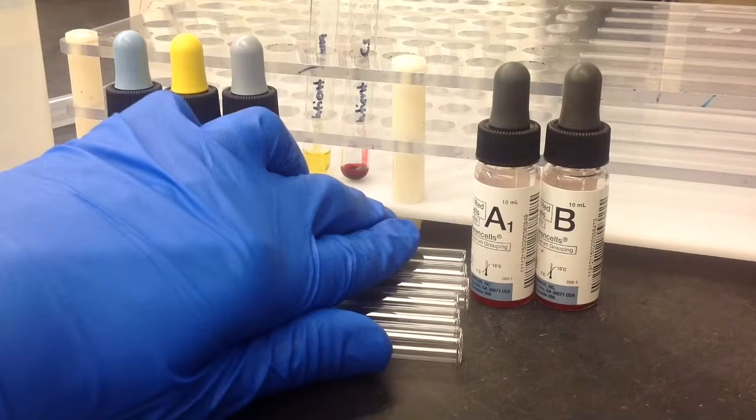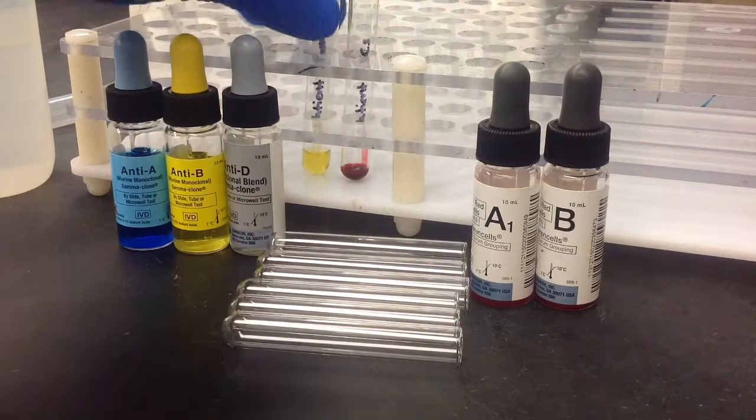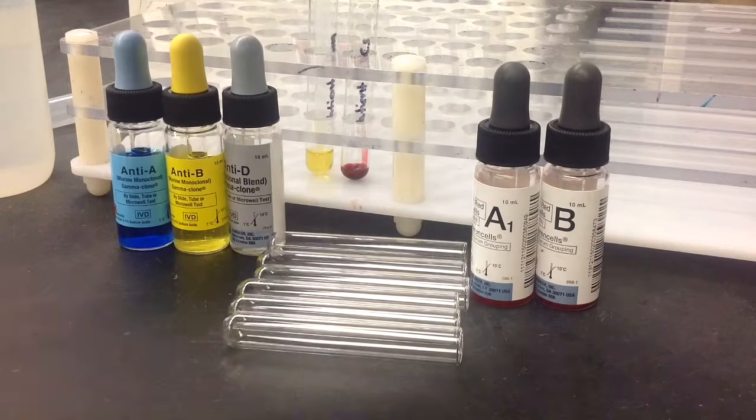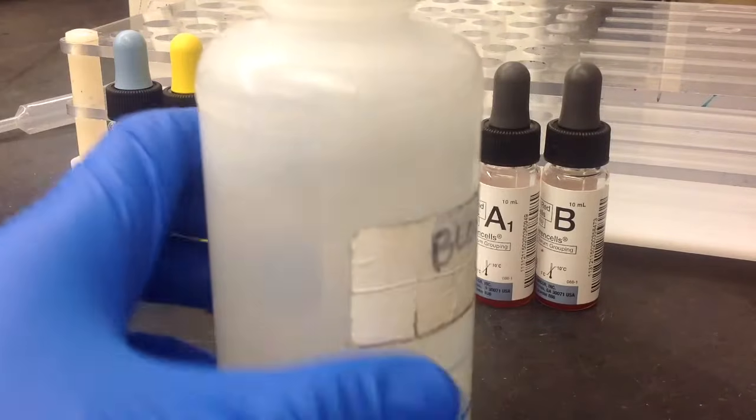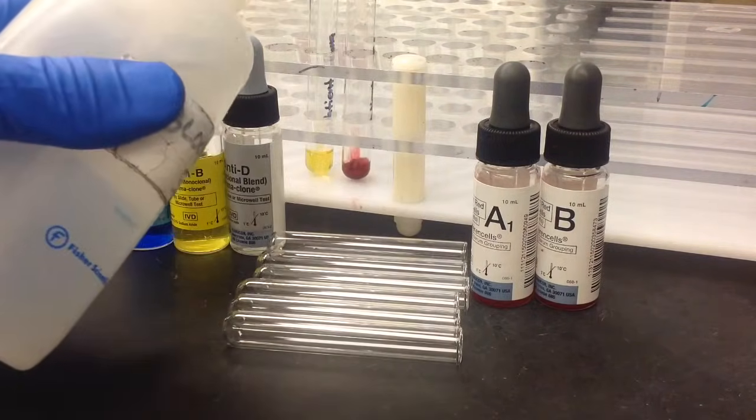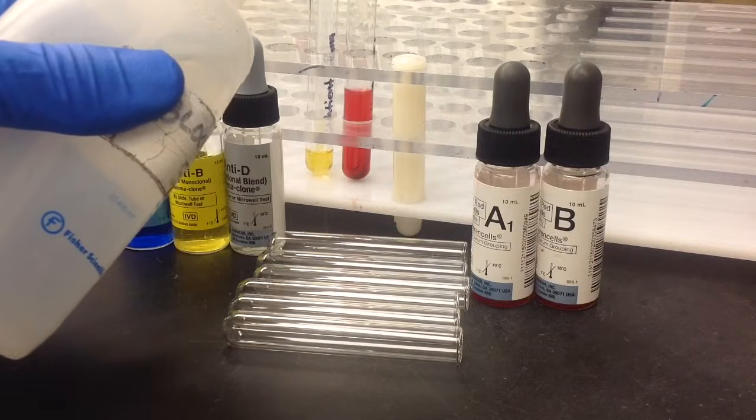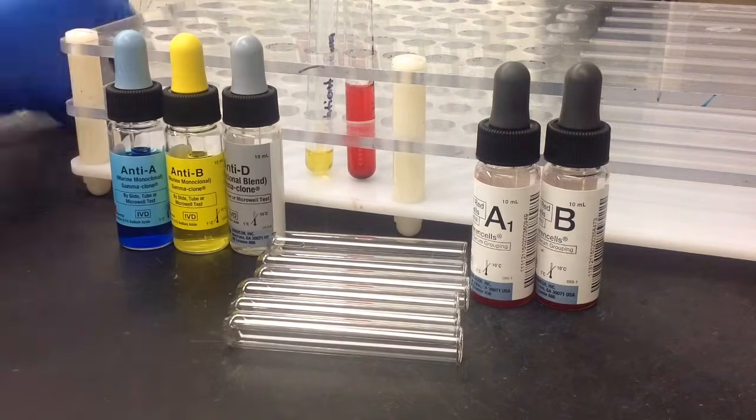And then you're also going to need some tubes, and some plasma, and some red cells. Now these are red cells that have been spun, so I need to make a suspension.